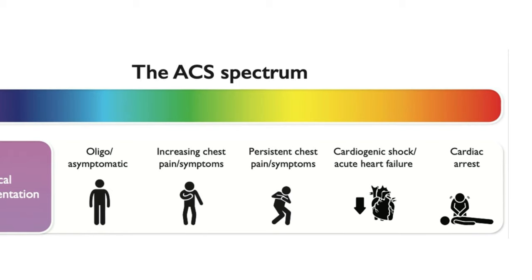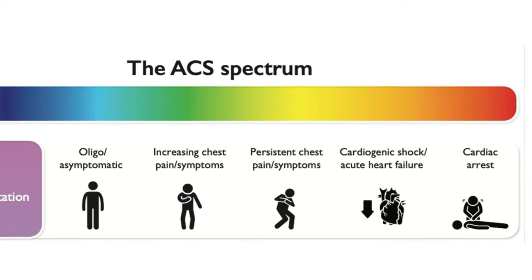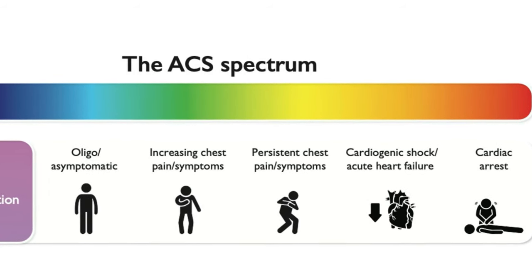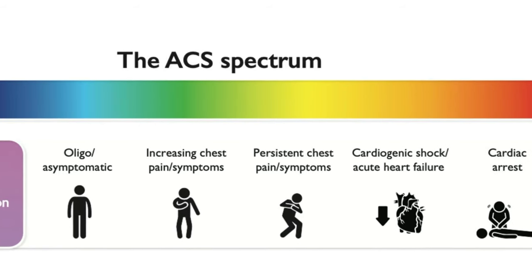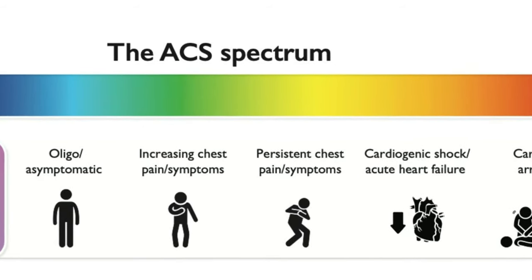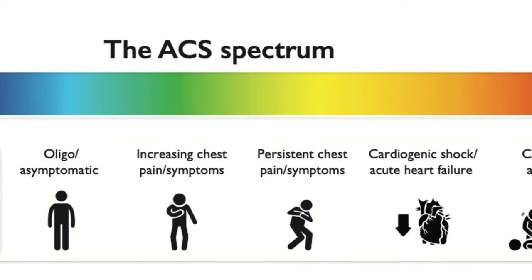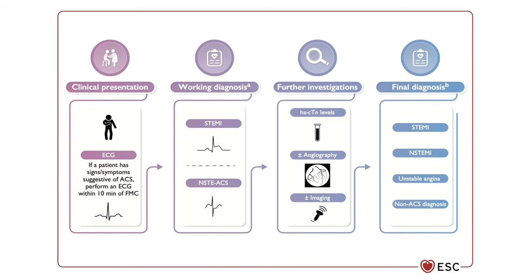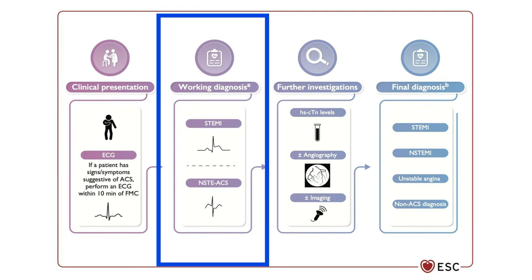ACS can present in many forms: patients can have vague or minimal symptoms, ongoing or recurrent chest discomfort, electrical or hemodynamic instability, cardiogenic shock, or even cardiac arrest. ECG and troponin are important in the initial triage and diagnosis, helping to risk stratify patients and guide initial management. Patients are classified based on ECG presentation to a working diagnosis of either STEMI or non-ST elevation ACS.